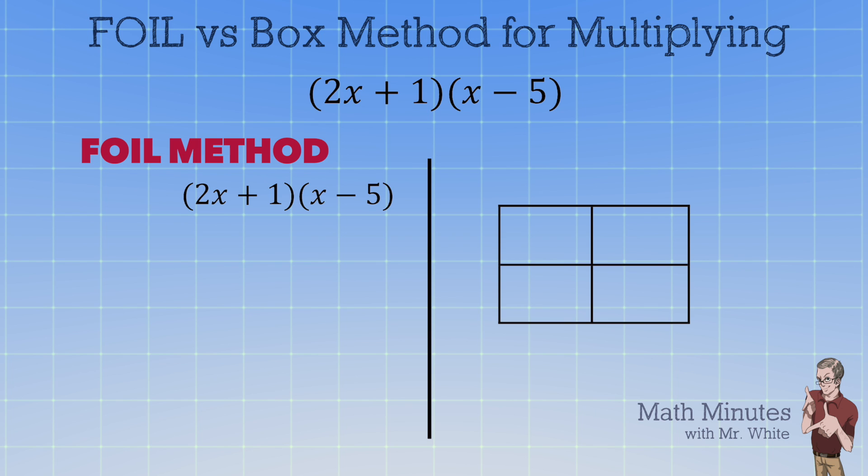I thought it might be interesting to compare the FOIL method to the box method for multiplying two binomials. I've actually taught both methods this year and a lot of my students like the box method where I generally prefer the FOIL method. So I thought it might be interesting to look at the advantages of each one in a couple of examples.